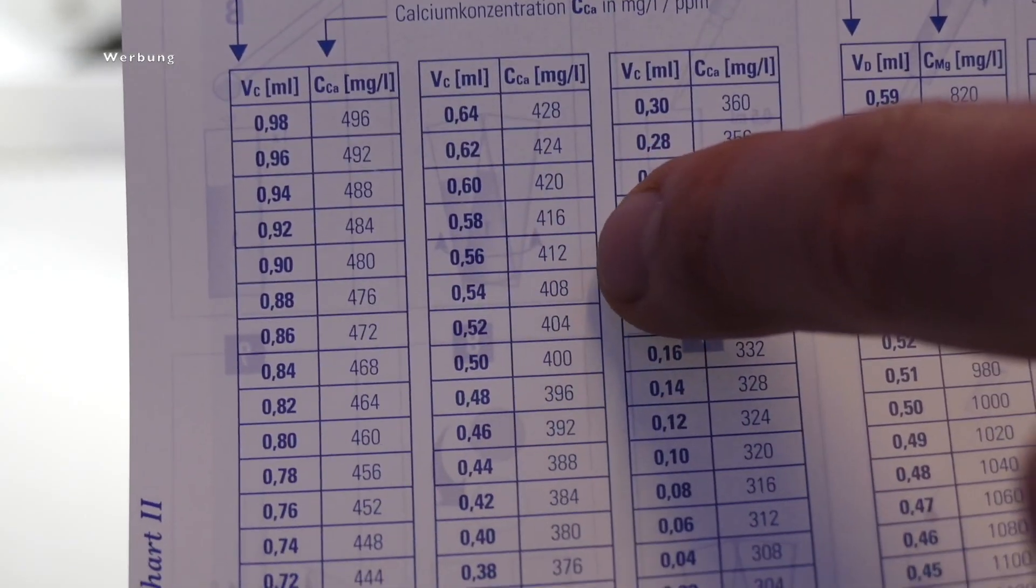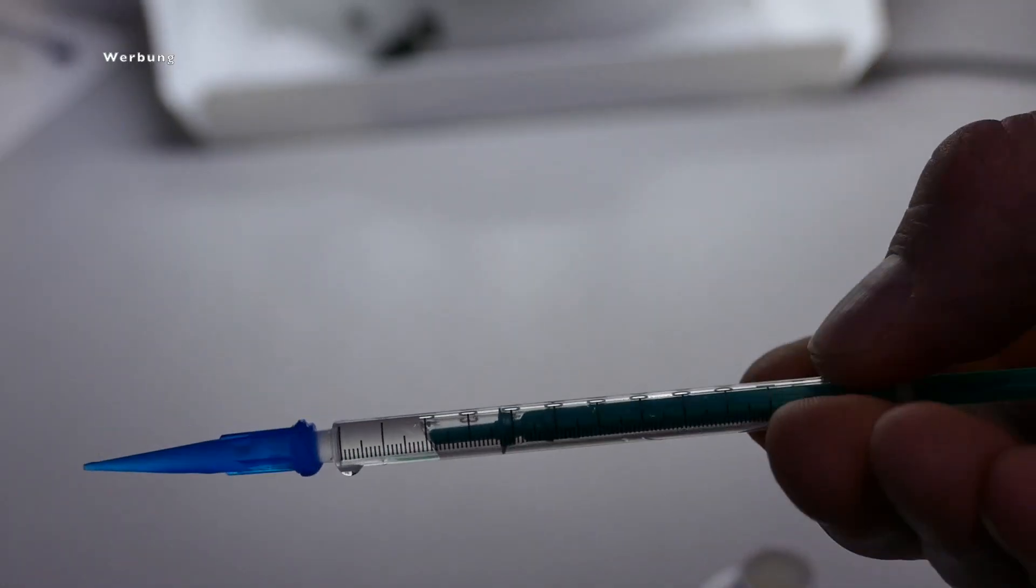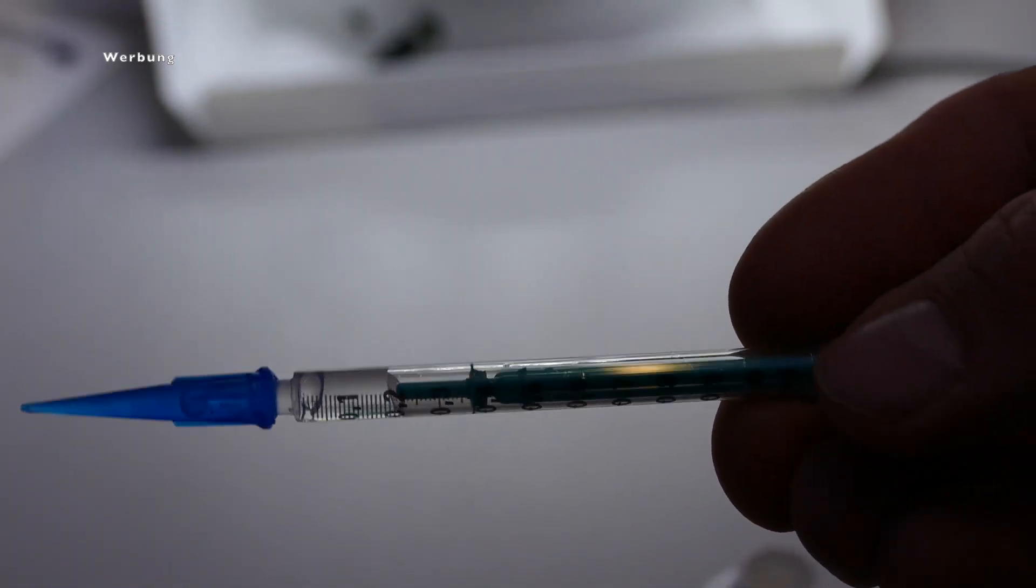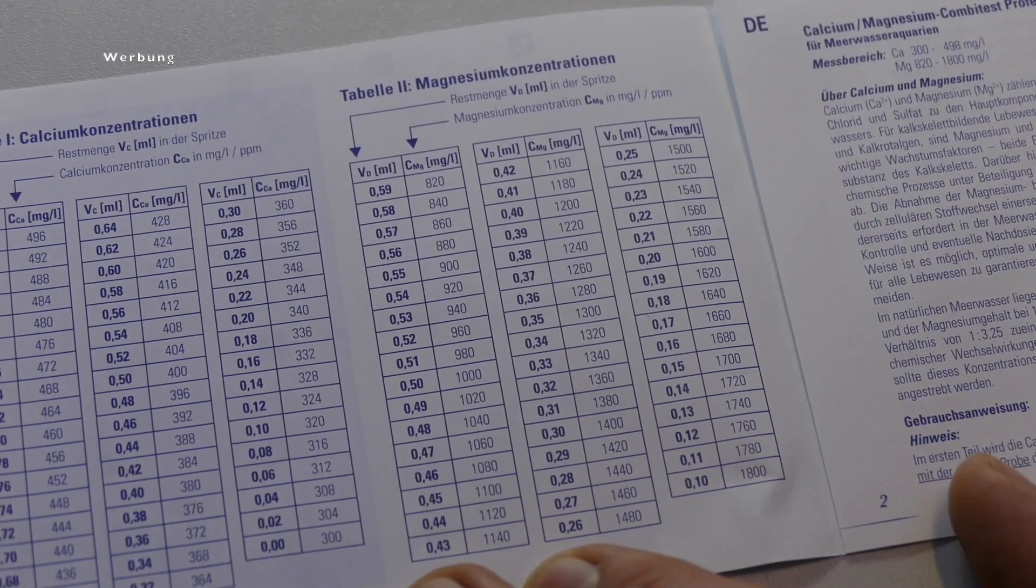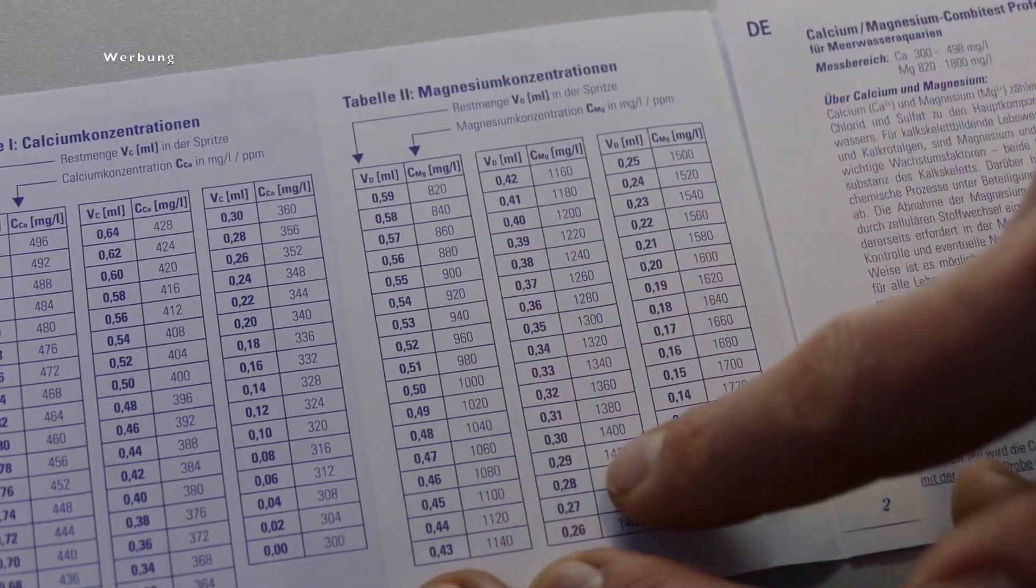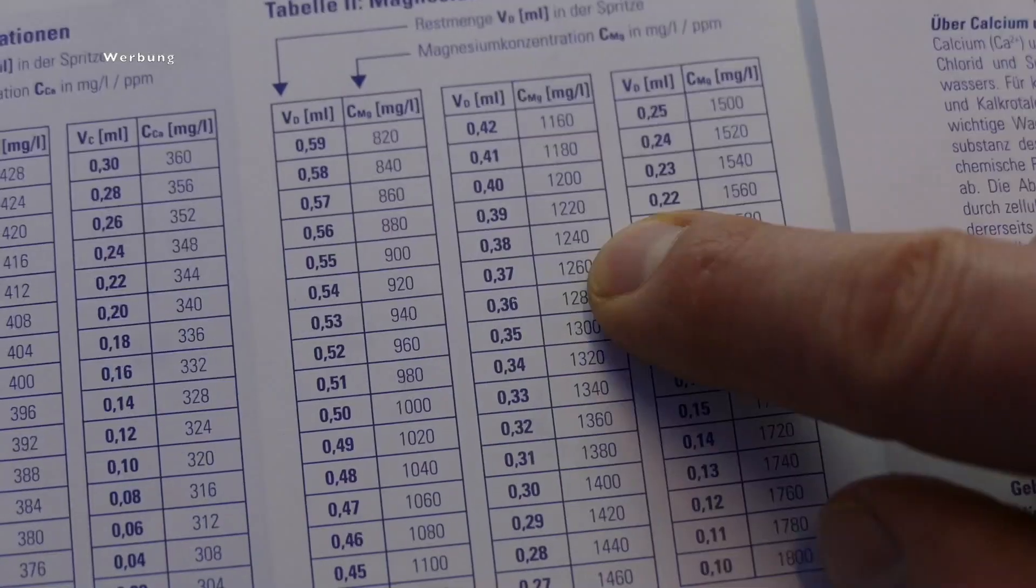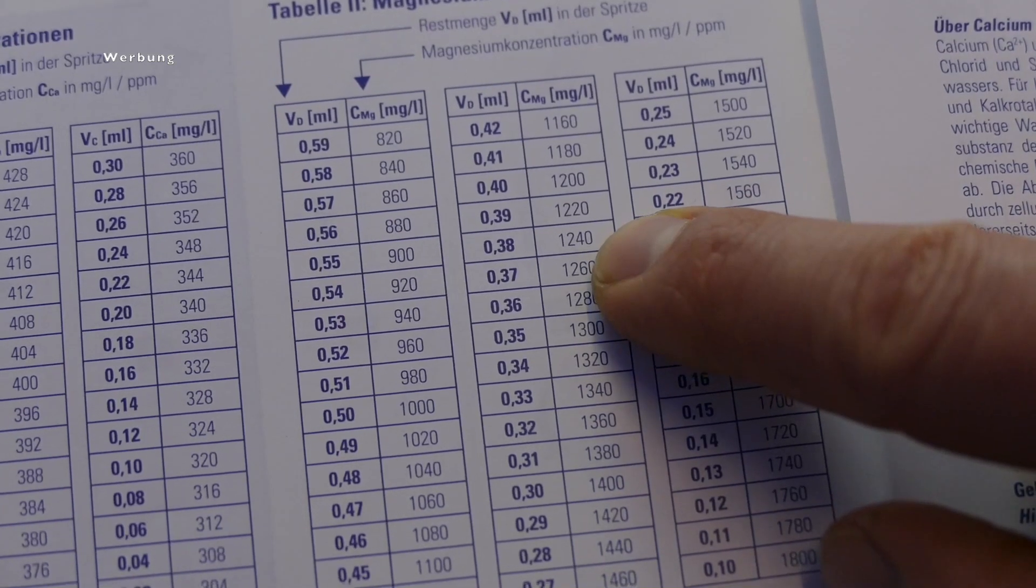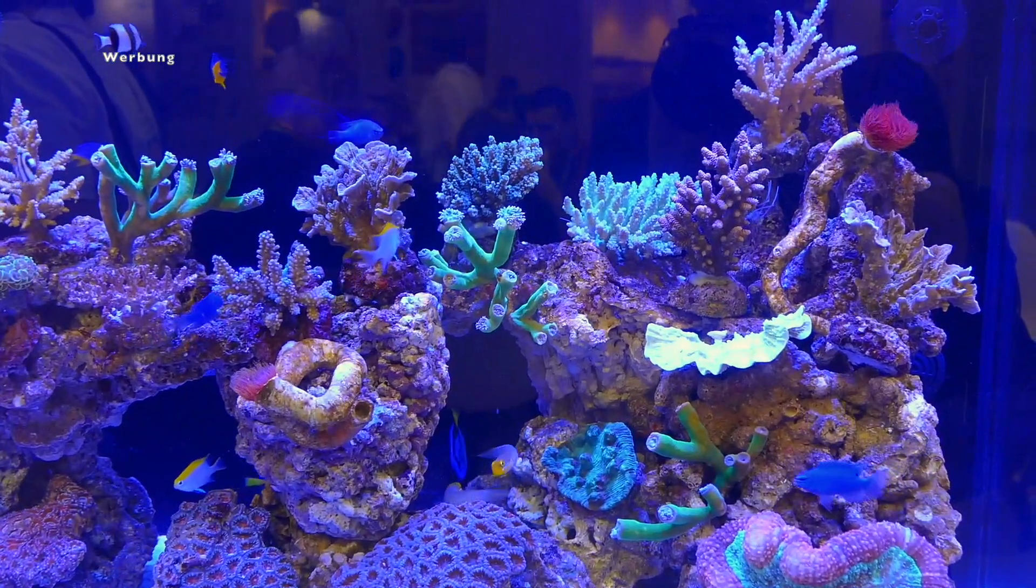Of course, we do the same thing when we determine the magnesium level. So when we have the color change from the light blue to colorless, we read off the syringe, the broad green markings, and with this amount we can then look up in the table what magnesium level we have. In this case, I now have a value of 1240. So I could use an increase a little bit.